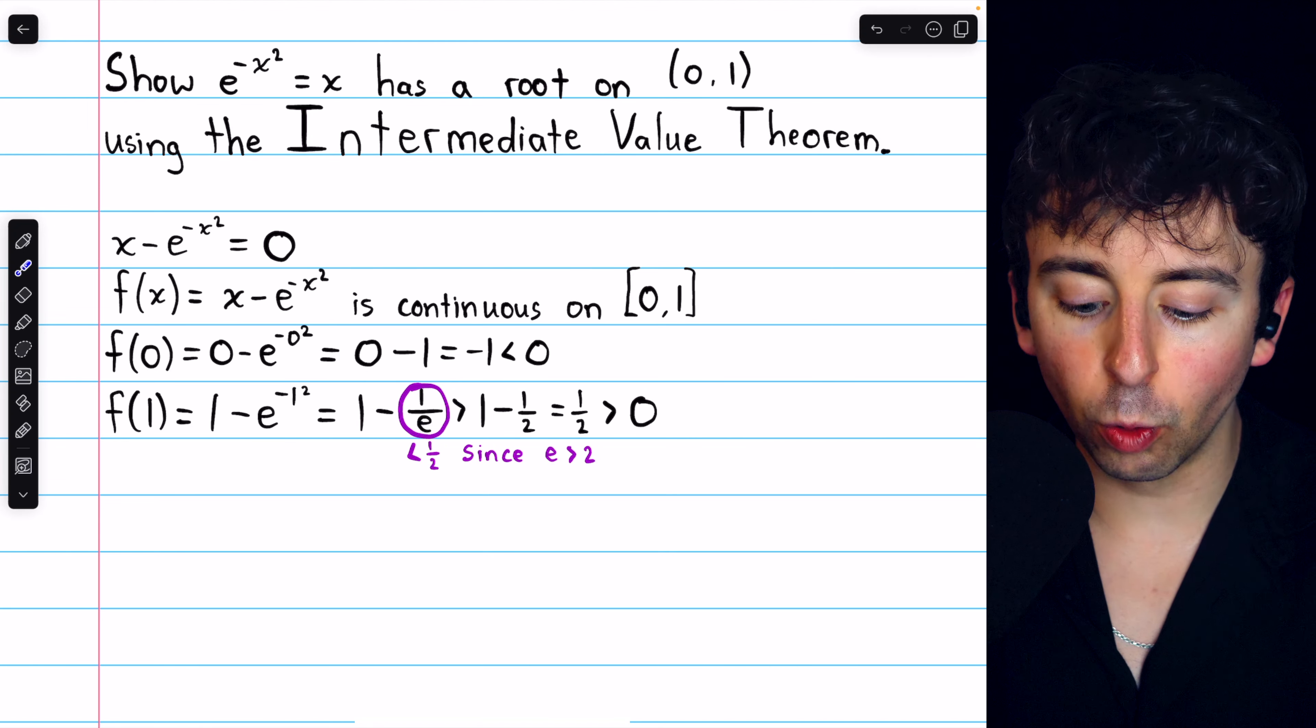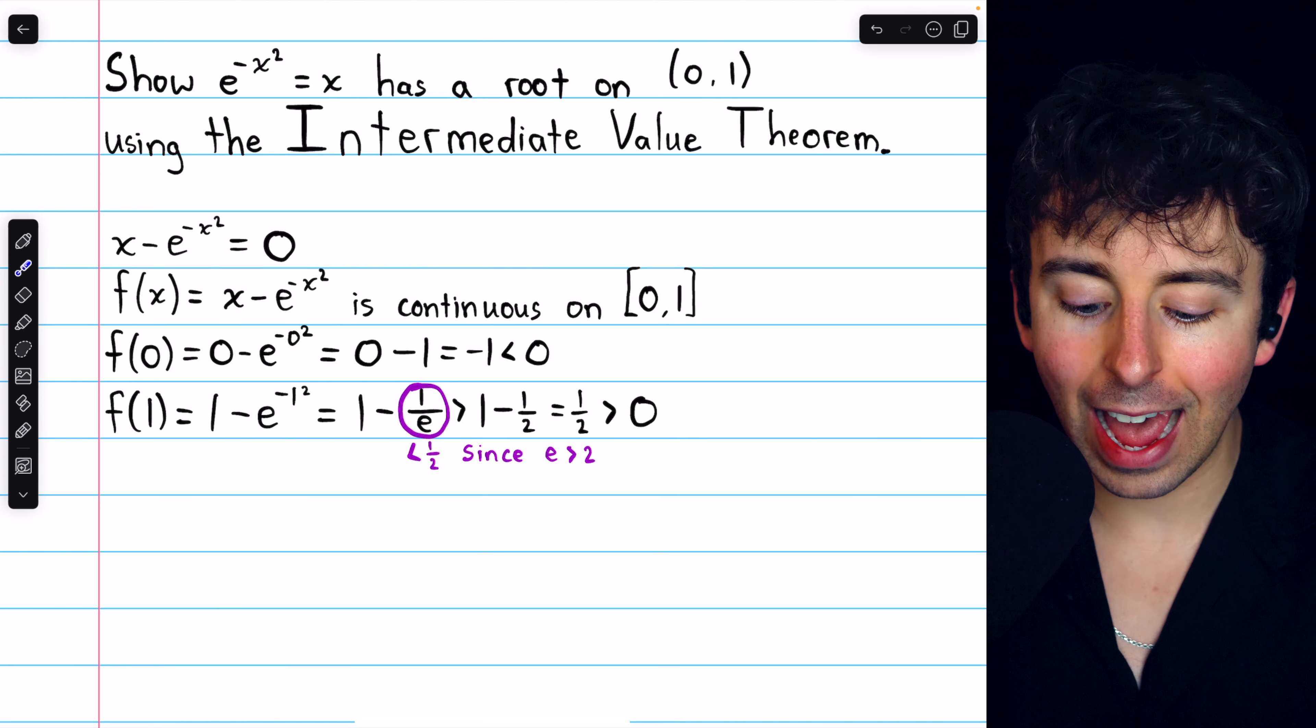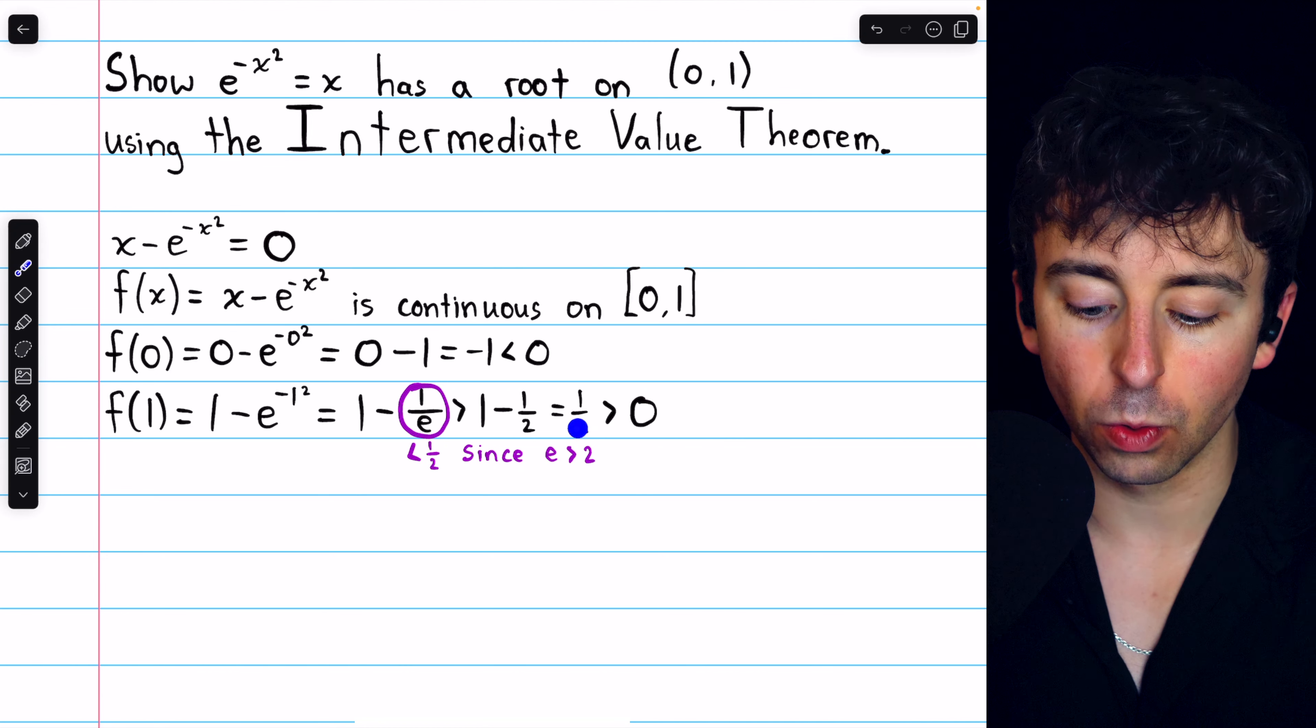1 minus 1 over e is greater than 1 minus a half. But 1 minus a half is equal to a half, which is greater than 0.